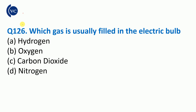Question number 126: Which gas is usually filled in the electric bulb? The electric bulb is filled with nitrogen gas. Nitrogen gas is filled in electric bulbs.